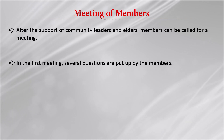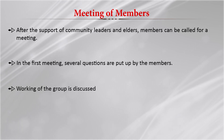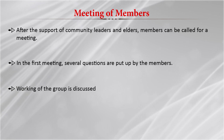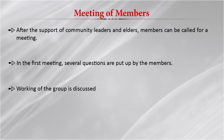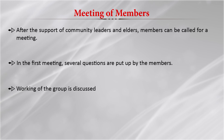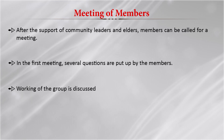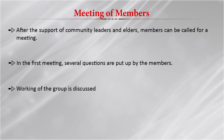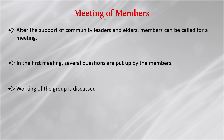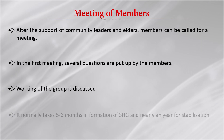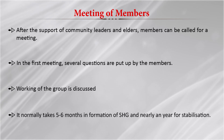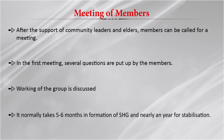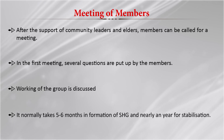Members are convinced that this group is going to help them. The working of the group is discussed and a chart is formulated outlining what is to be done at a later stage. Usually it takes five to six months for forming an SHG and nearly a year for stabilization. That is why it takes six months before bank loans can be accessed through banks, as the banks don't come into the picture initially. All members need to understand the working and be convinced about the whole concept.